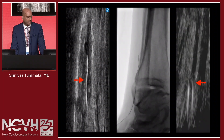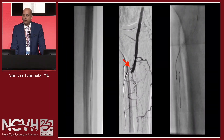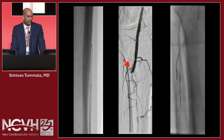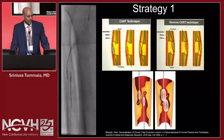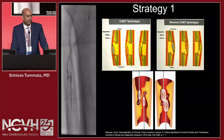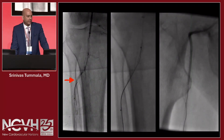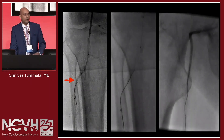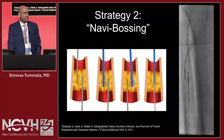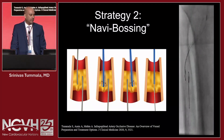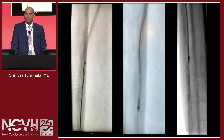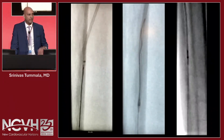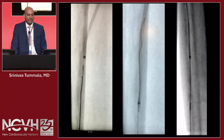Once we got to the top, we thought we'd recanalized this in less than 30 seconds — and then you realize you're in two different sub-intimal planes. The decision point: I have two strategies. One is CART or reverse CART or some variation. The other — which I'll show here — we used a 3-millimeter balloon from above and got through-and-through access and externalized the wire. But a technique that's really helped me is Navibossing — using a 035 Navicross catheter to create a dissection plane and disrupt the septum between the two separate sub-intimal recanalization systems to achieve through-and-through access.